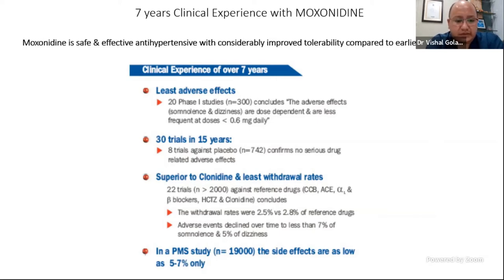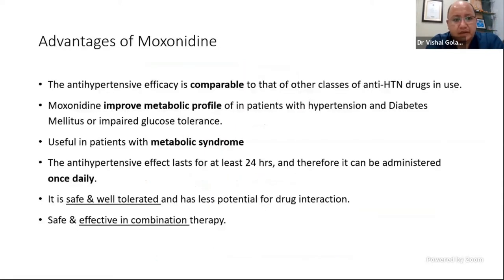In post-marketing surveillance studies with around 19,000 patients, side effects were quite low. Side effects carried forward from the clonidine group — some patients have dry mouth and drowsiness — but the percentage is much less compared to clonidine. Moxonidine was also superior to clonidine in withdrawal trials, with much lower withdrawal rates due to a better rebound hypertension and side effect profile. To summarize: moxonidine is a good antihypertensive comparable to other first-line agents, improves metabolic profile especially in metabolic syndrome, has a 24-hour effect allowing OD dosing, is safe and well tolerated, and is effective in combination with other first-line agents.